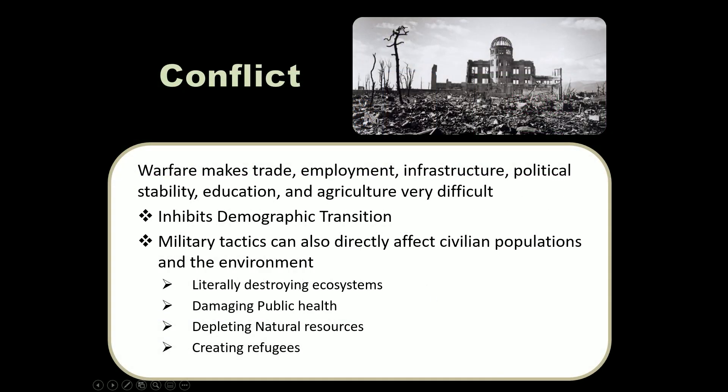The last topic for unit three is conflict — specifically war. The learning objectives address how conflict affects ecosystems, biodiversity, and the demographic transition. One factor in classifying countries as less or highly developed is political stability. Areas with high conflict — military operations, groups fighting over power or territory — are inherently politically unstable, so many less developed countries have quite a bit of conflict.